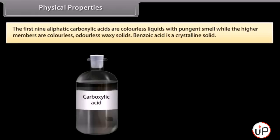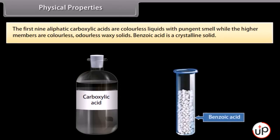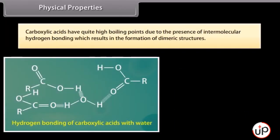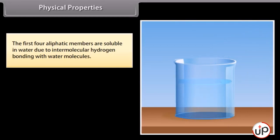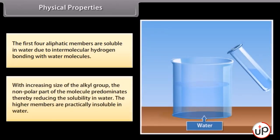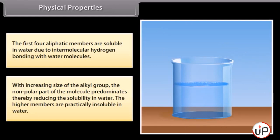Physical properties: the first nine aliphatic carboxylic acids are colorless liquids with a pungent smell, while the higher members are colorless odorless waxy solids. Benzoic acid is a crystalline solid. Carboxylic acids have quite high boiling points due to intermolecular hydrogen bonding which results in the formation of dimeric structures. The first four aliphatic members are soluble in water; with increasing size of the alkyl group, solubility in water decreases, and higher members are practically insoluble in water.